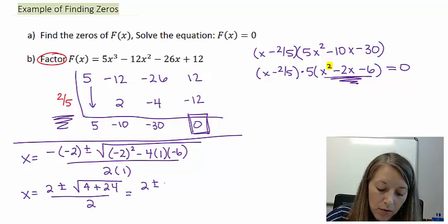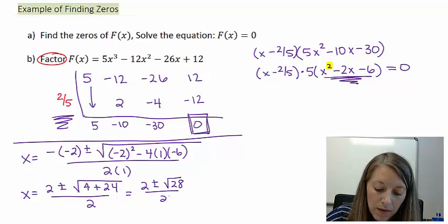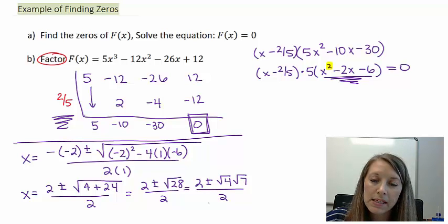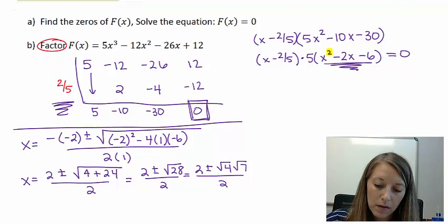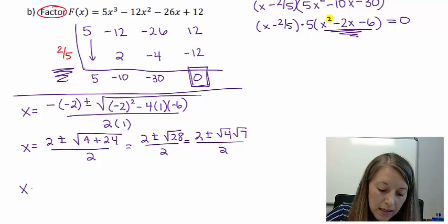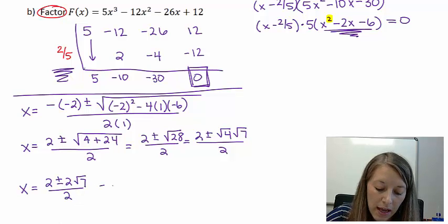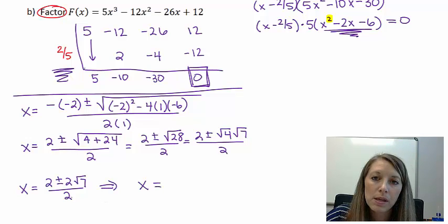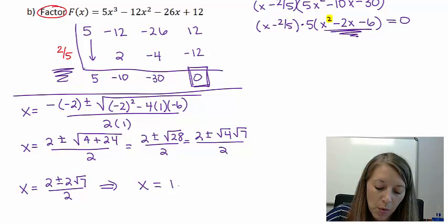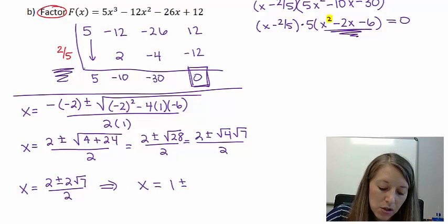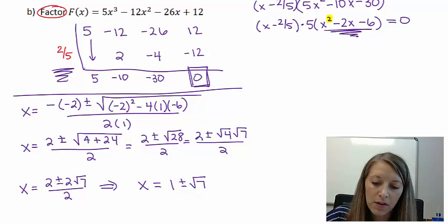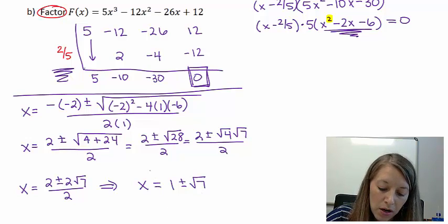So negative 2 squared minus 4 times 1 times negative 6 all over 2 times 1 gives me x equals 2 plus or minus square root of 4 plus 24 all over 2. Simplifying my square root gives me square root of 28, and breaking down my square root, 28 simplifies as 4 and 7. So it gives me x equals 2 plus or minus 2√7. Since this is all over 2 I can cancel those 2s, giving me 1 plus or minus √7.